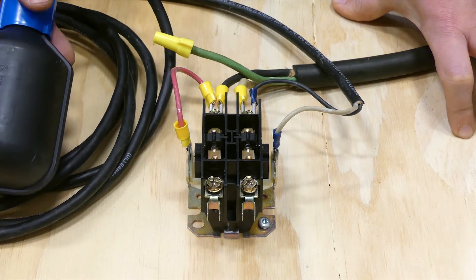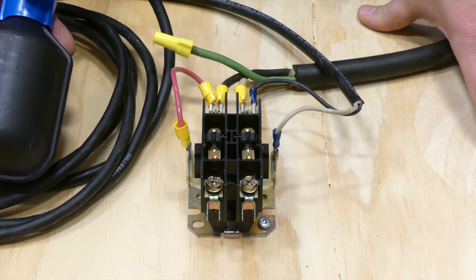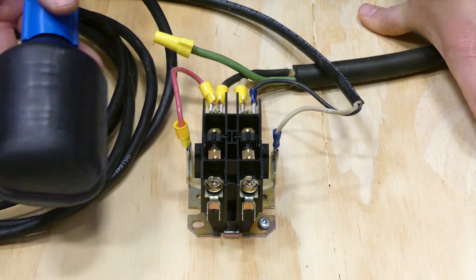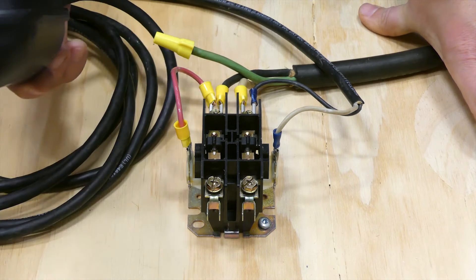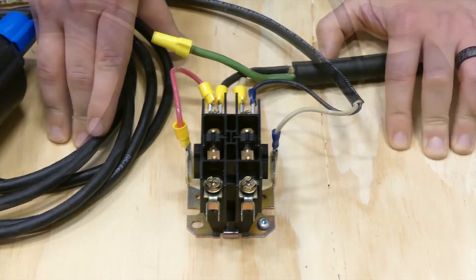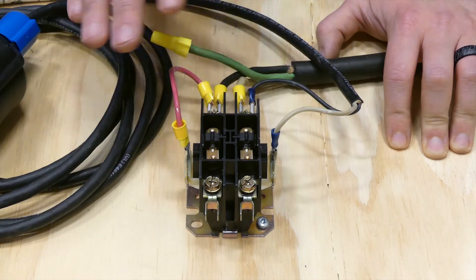And once that water level drops, then that goes ahead and shuts off the float switch which disengages the contactor. So it's kind of a nice simple way to have that engage and disengage.